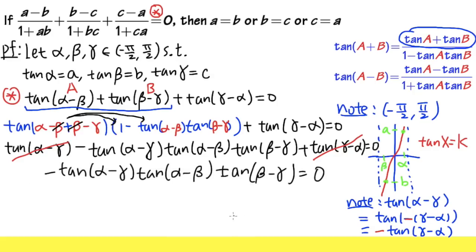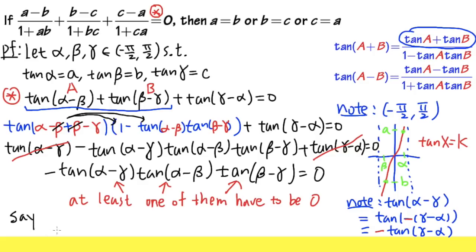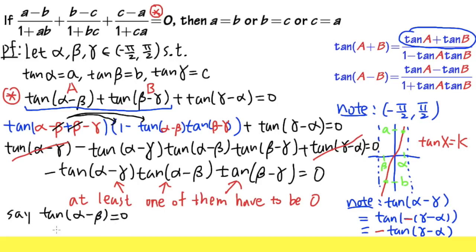Now everything is multiplying, so this implies at least one of the factors equals zero. Let's say tangent(alpha minus beta) equals zero — it doesn't matter which one we pick, because showing any one of them leads us to the conclusion. So, if tangent(alpha minus beta) equals zero, what can we say about alpha minus beta? It must equal zero.